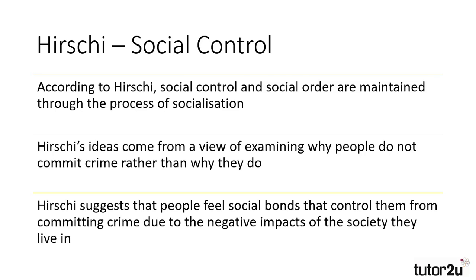Hirschi's approach to crime and deviance differs from other functionalist theorists. While he suggests that social control and social order are maintained through the process of socialisation, he also examines the rationale behind why people do not commit crime rather than why they do. Hirschi's theory suggests that individuals are controlled by their bonds of attachment to society and this is why they do not deviate.